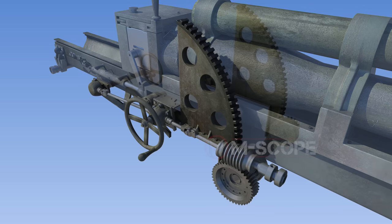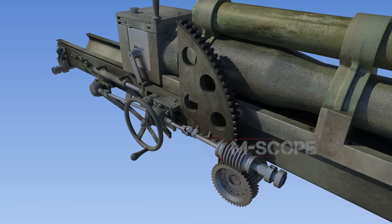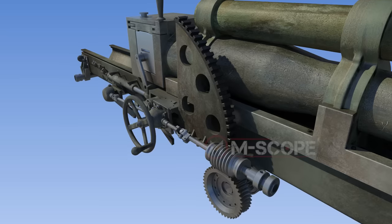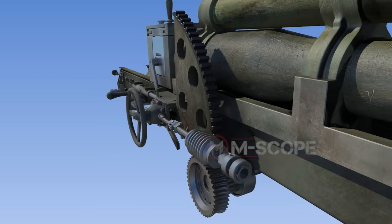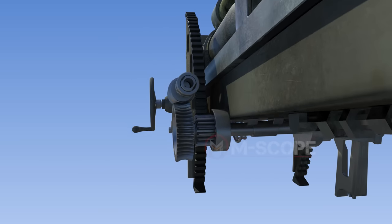This is an elevating mechanism of a 105mm howitzer. By turning the handwheel, the force is delivered to the gear and turns the rack. This rack is connected to the cradle and allows the cannon to move up and down.